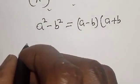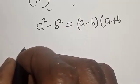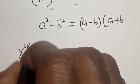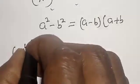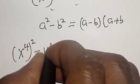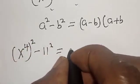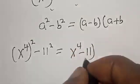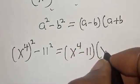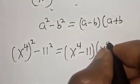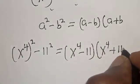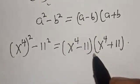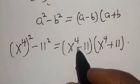Now we have x to the power 4, squared, minus 11 squared, which equals x to the power 4 minus 11, multiplied by x to the power 4 plus 11.